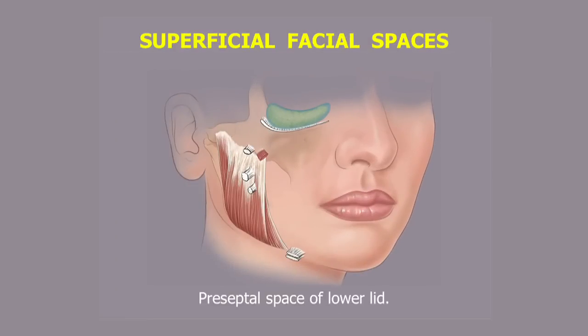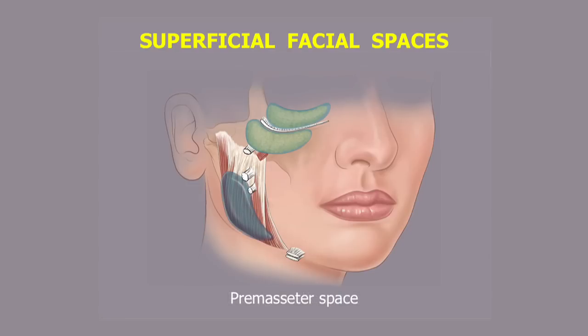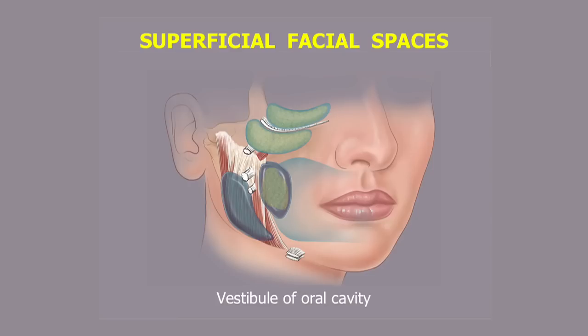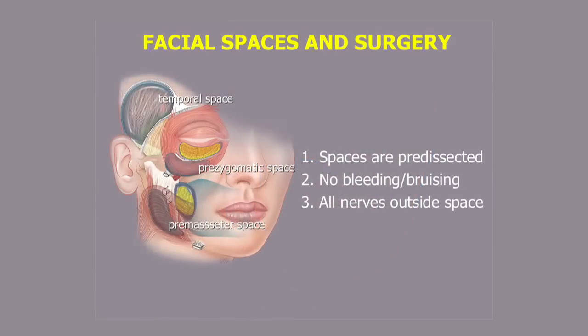The spaces of the face include the preseptal space of the lower lid, the prezygomatic space, and the premasseter space over the lower masseter. The masticator space containing the buccal fat pad and the vestibule of the oral cavity is also effectively a space, because it doesn't contain ligaments and it has mobility. In terms of operative surgery, there are many advantages in using the spaces: they are pre-dissected, so bleeding and bruising simply do not occur, and the only vital structures — the facial nerve branches — are outside the spaces.